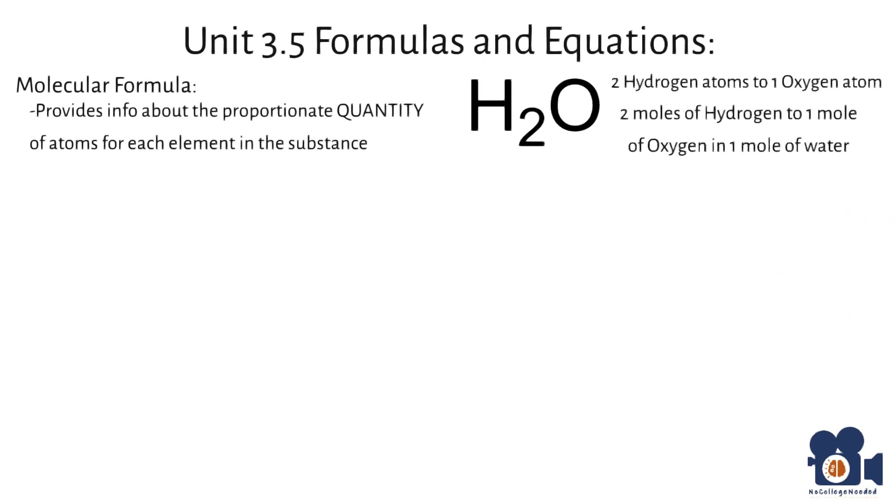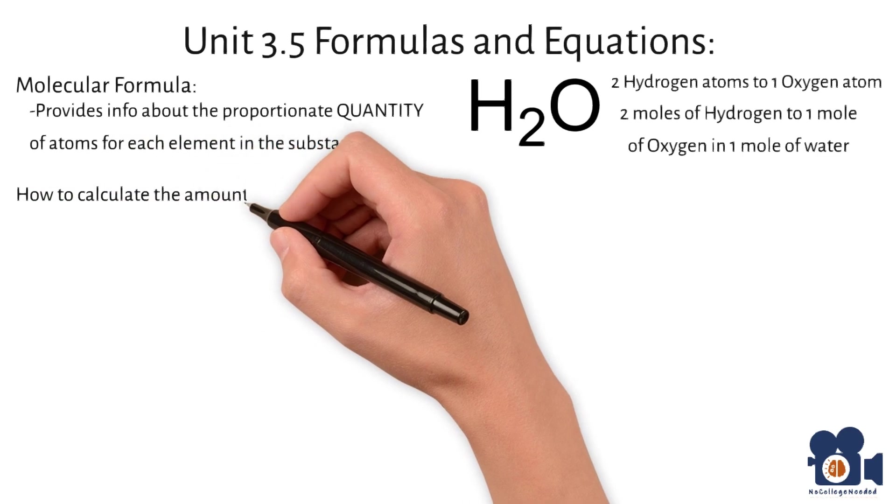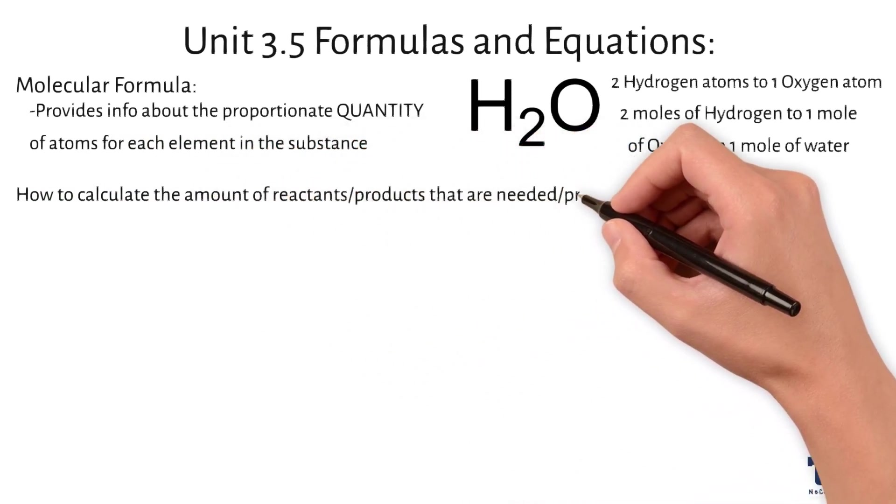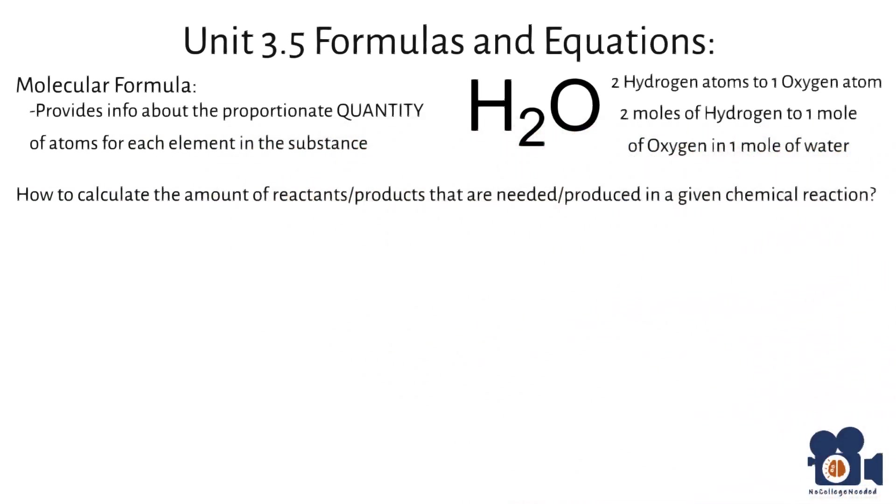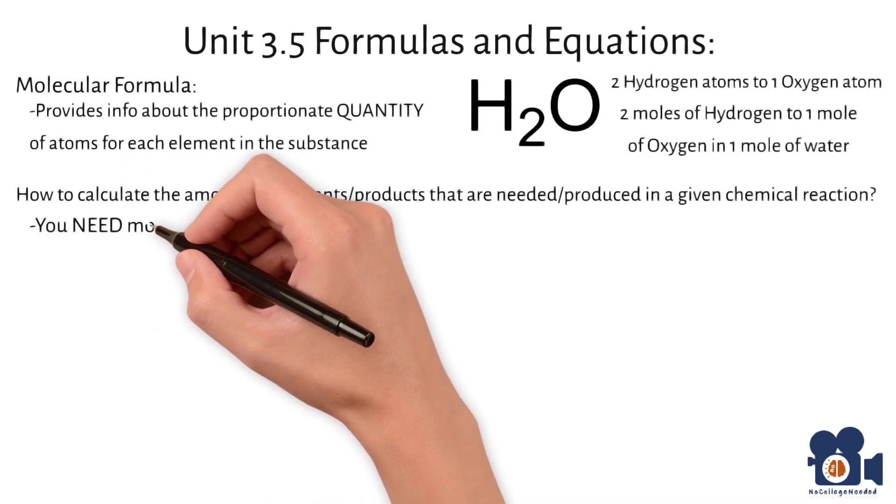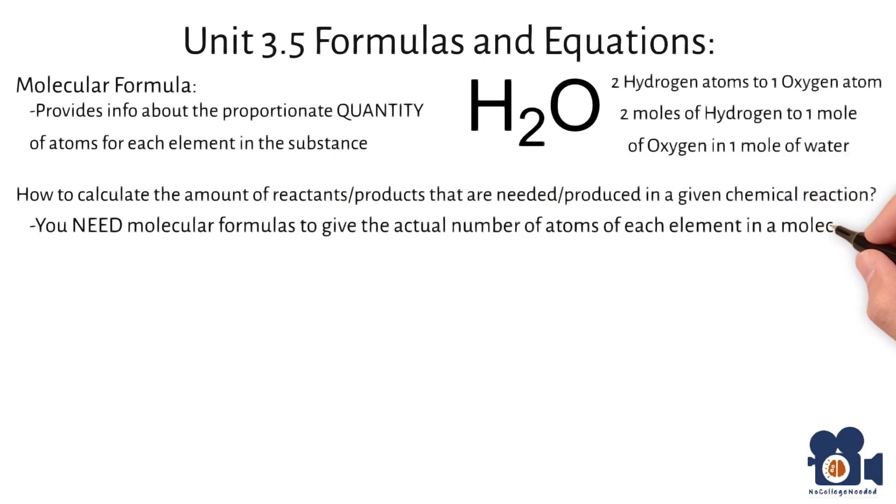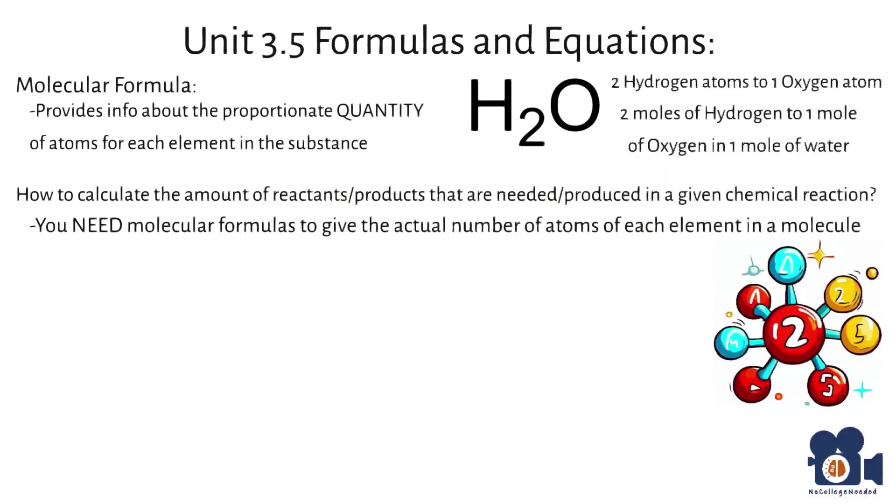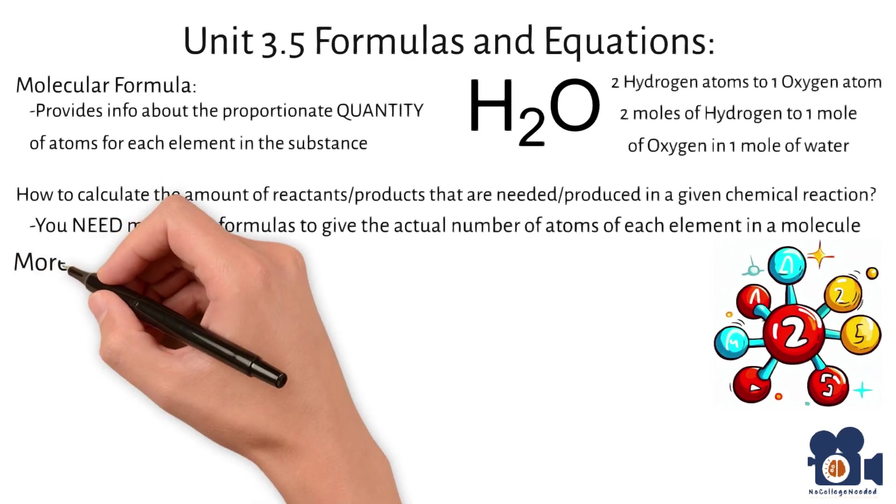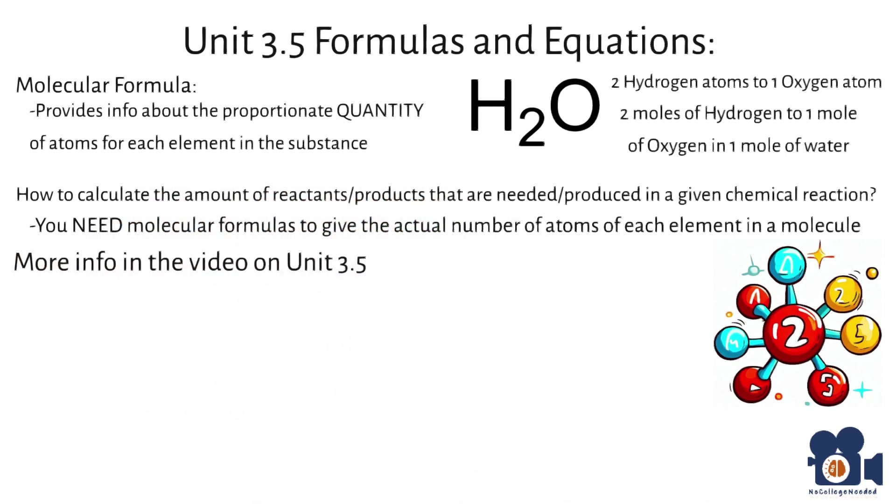One of the most fundamental equations you'll need to solve for as a chemist is to calculate the amount of reactants or products that are needed or produced in a given chemical reaction. To answer this, you need the molecular formula that gives the actual number of atoms of each element in a molecule for each of the reactants and products. For an in-depth calculation, please check out the video on unit 3.5 to see how you would calculate the amount of starting materials needed to synthesize five kilograms of the anesthetic lidocaine.